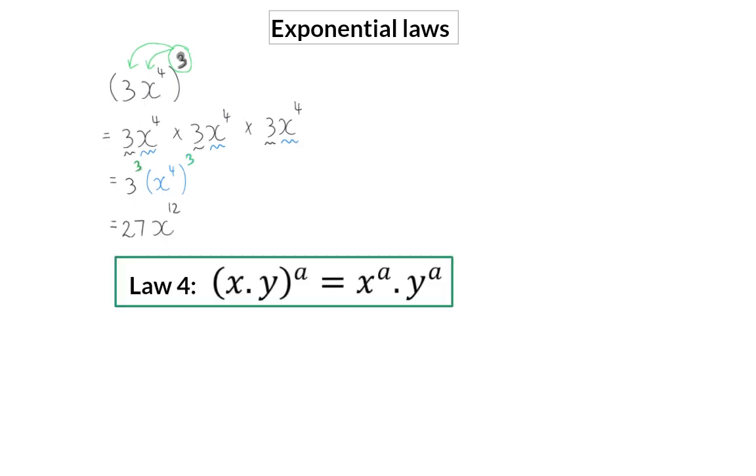The fourth exponential law can now be explained as follows. When I have one term with different base numbers, the exponent on the outside can be applied to each base number individually as shown here.